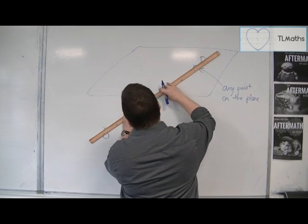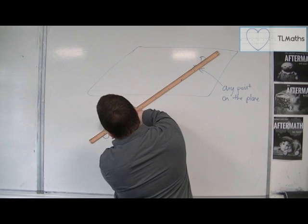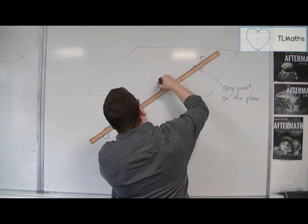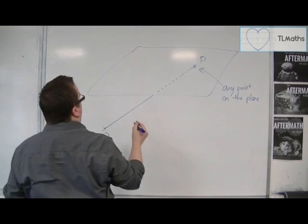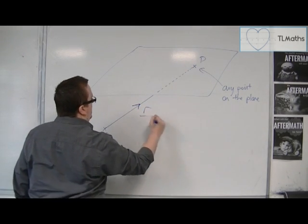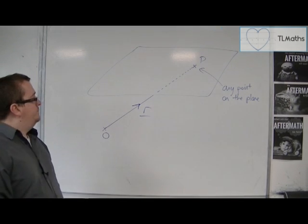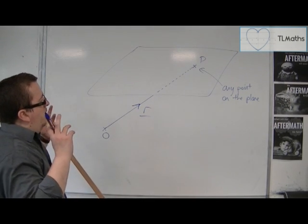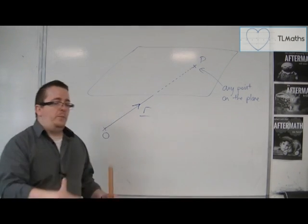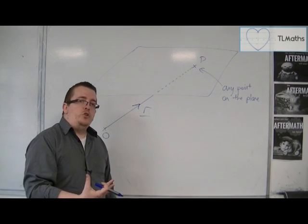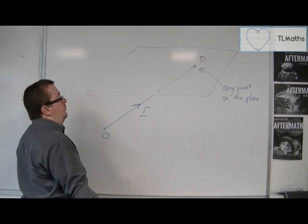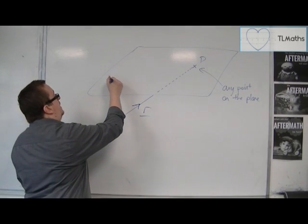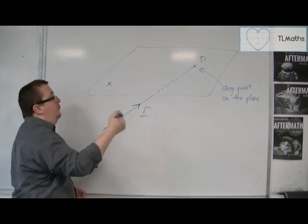So I need some instructions to get me from O to P, and we'll write that in as R. Clearly, as we did with the vector equation of a plane, I need to know a point that is on the plane to start off with. I need instructions to get me onto the plane.